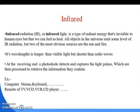Infrared wavelength is longer than visible light but shorter than radio waves. At the receiving end, a photodiode detects and captures the light pulses, which are then processed to retrieve the information they contain. Examples of devices using infrared include computer mice, keyboards, TV remotes, VCD/VCR players, and CD players.